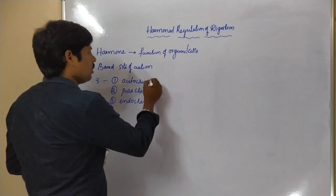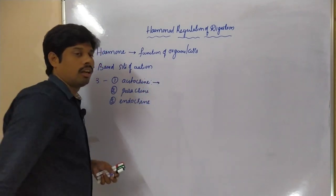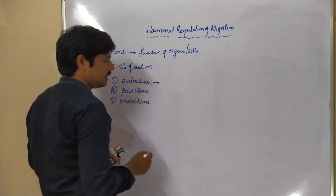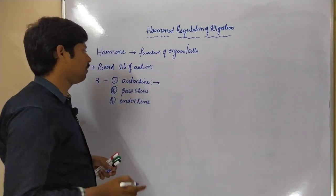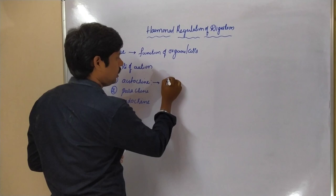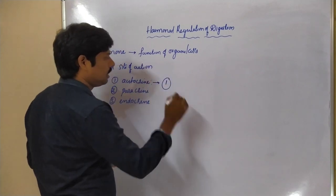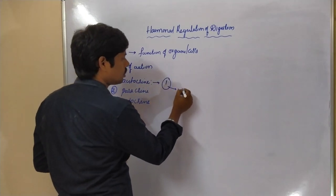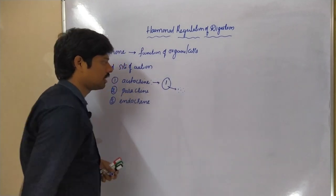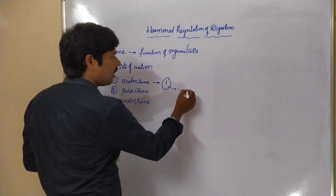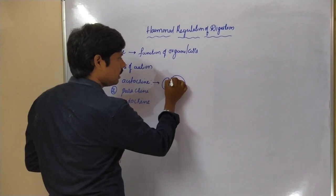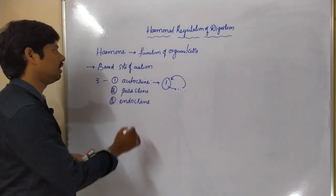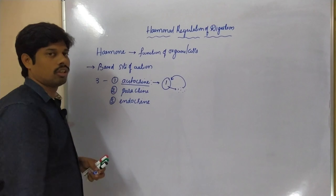Autocrine is the situation where hormones which are released by one type of cell act again on the same cell. The type of condition where a cell releases chemical messengers and those hormones act on the same cell is called the autocrine situation.